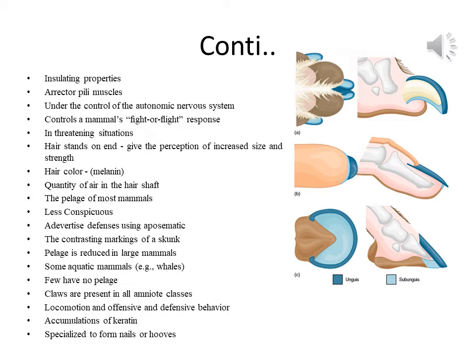Claws are present in all amniote classes and are used for locomotion and offensive and defensive behavior. Claws form from accumulation of keratin that covers the terminal phalanx, the terminal bone of the digits. In some mammals they are specialized to form nails and hooves. The picture on the slide shows the structure of claws and hooves — A is the claw and B is the hoof.